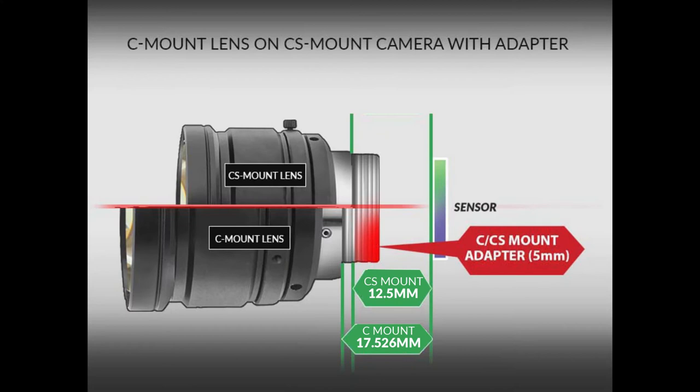You can use a CS-mount adapter allowing you to use a C-mount lens on a CS-mount camera. Maybe you have a specific application which requires a certain C-mount lens and you only have a CS-mount camera available — a simple solution without having to invest in new kit. Unfortunately this doesn't work the other way around, so the use of CS-mount lenses on C-mount cameras is not possible.